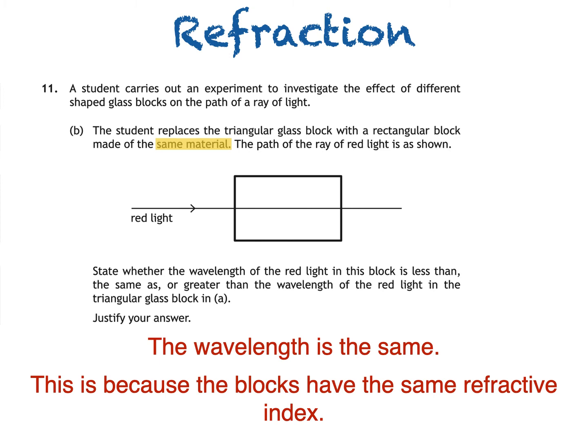Refractive index is basically a measure of how much the speed and wavelength change as the light passes from one material to another. Different materials have different refractive indices, so blocks made of the same material will obviously have the same refractive index.